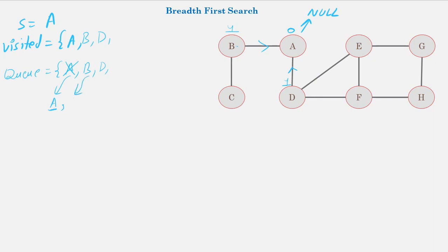The next element popped is B. We explore the adjacent vertices of B. The first is A, but A is already visited so we skip it. Next is C — C is not visited, so we add C to the visited list and to the queue. The parent of C is B, and the level of C is the level of B plus one, which is 2.